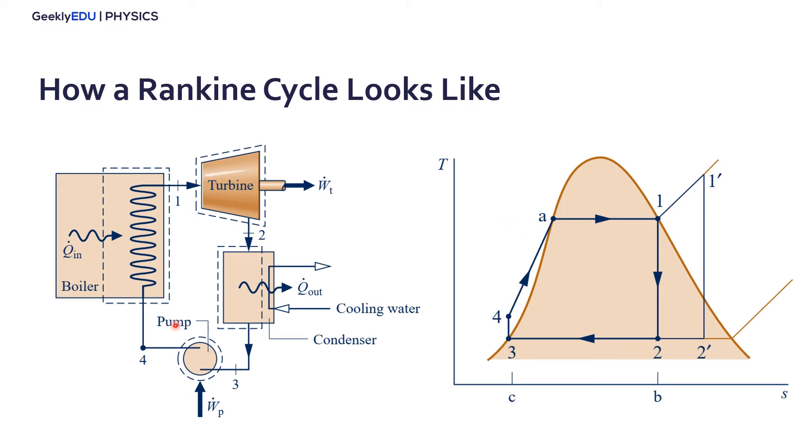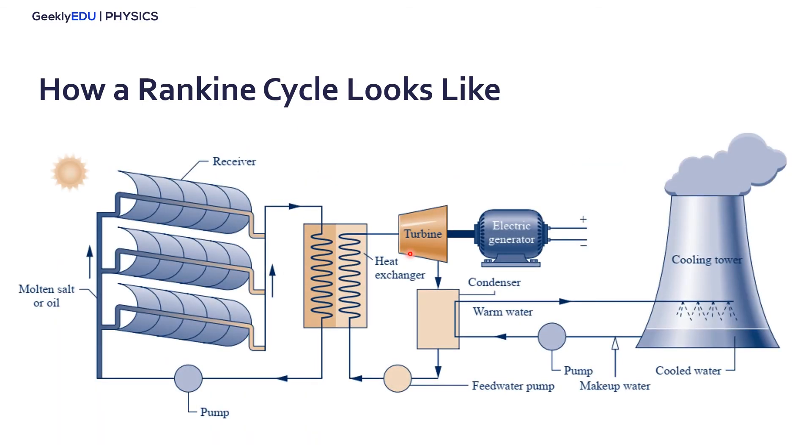Well, this is basically how it works. In real life we would have something like this. The Rankine cycle is actually here in the middle: the heat exchanger or the boiler, the turbine, the condenser, and the pump.